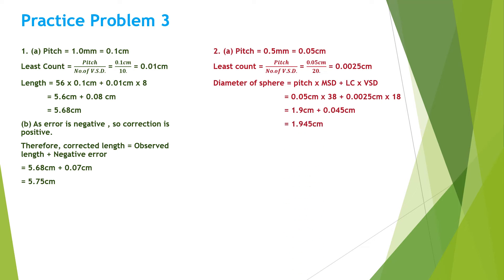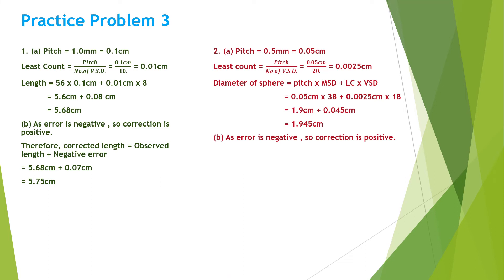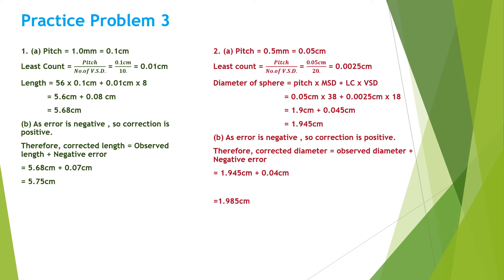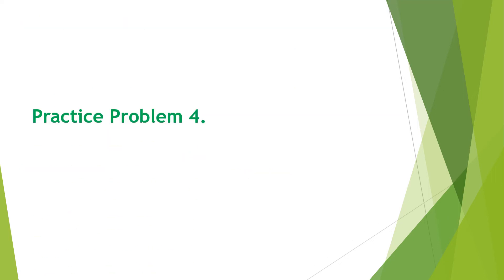So the observed diameter comes to be 1.945 centimeter. As there is a negative error, the correction will be positive. Therefore, the corrected diameter is observed diameter plus negative error: 1.945 centimeter plus 0.04 centimeter equals 1.985 centimeter.